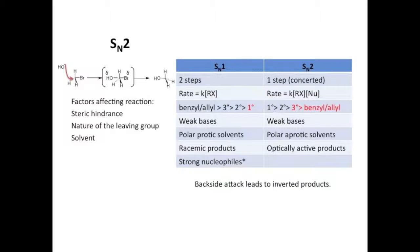There's also a distinction in the products. Whereas SN1 led to racemic products, SN2 will still be optically active, as the backside attack leads to a relative inversion in the products, which you can see in the mechanism example. So what this means is that if you started with an R, you would get either an R or an S, but not both. And when you have only one enantiomer, the products will be optically active.